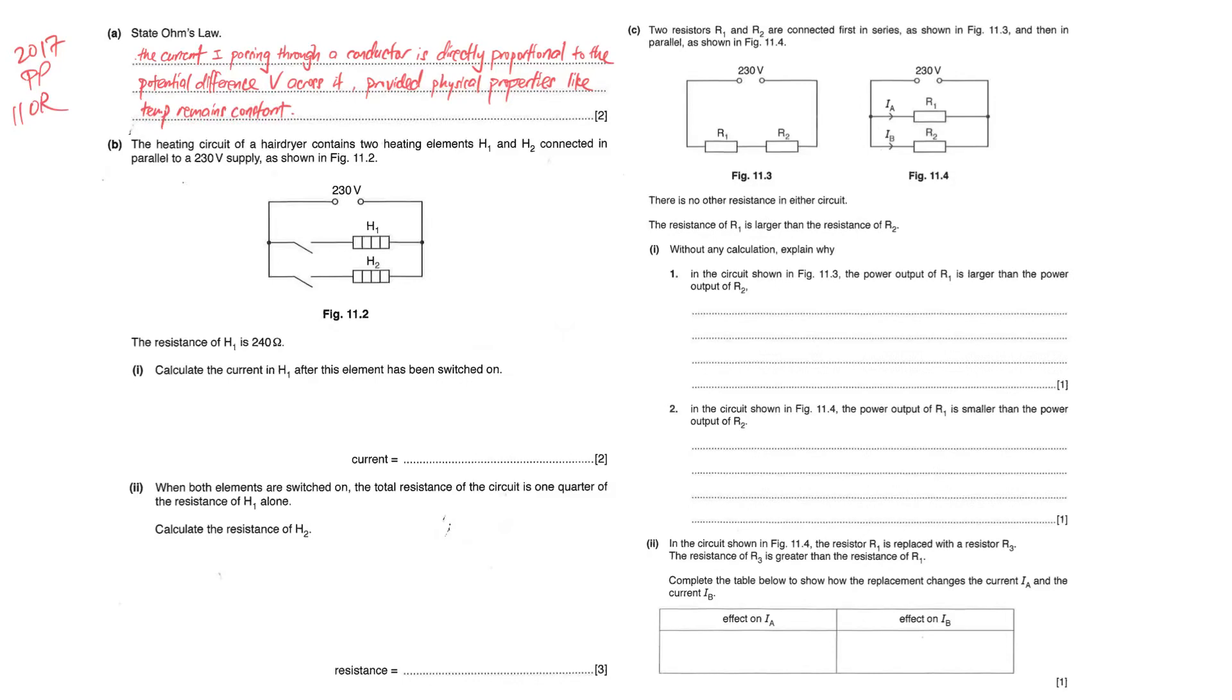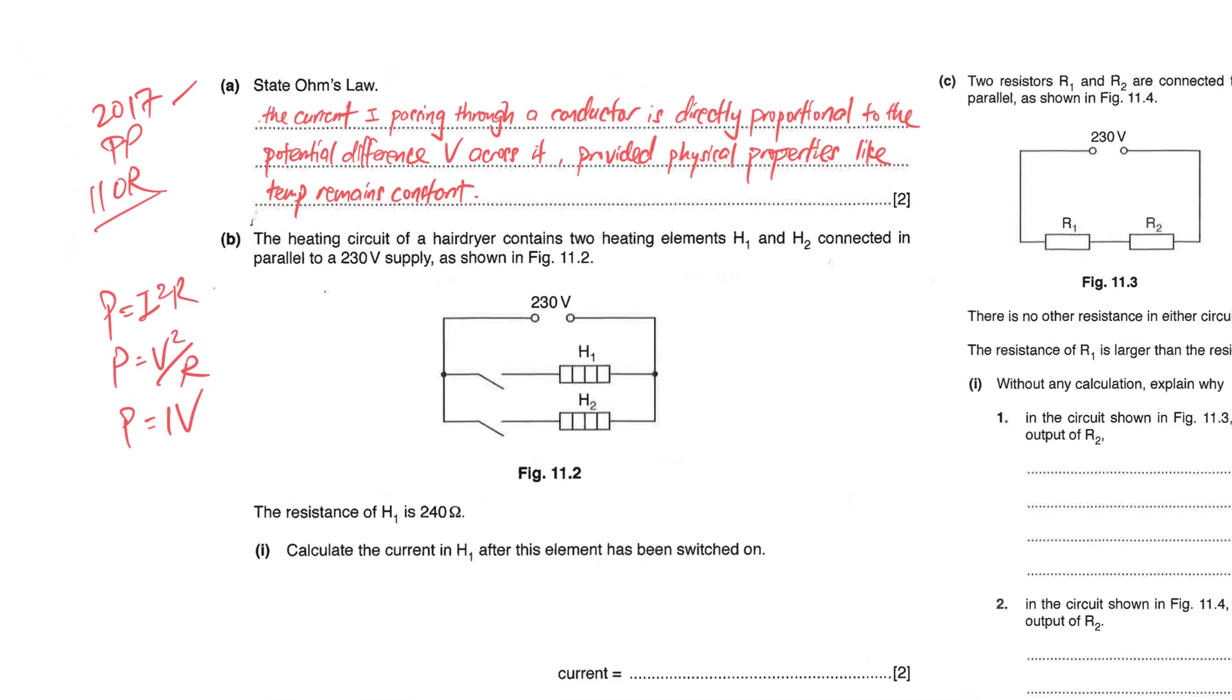In this video I'll be touching on when do you use power equals to I squared R or power equals to V squared over R for your explanation instead of the usual power equals to IV. I'll be using a Pure Physics 2017 Paper 2 Question 11 to go through this.